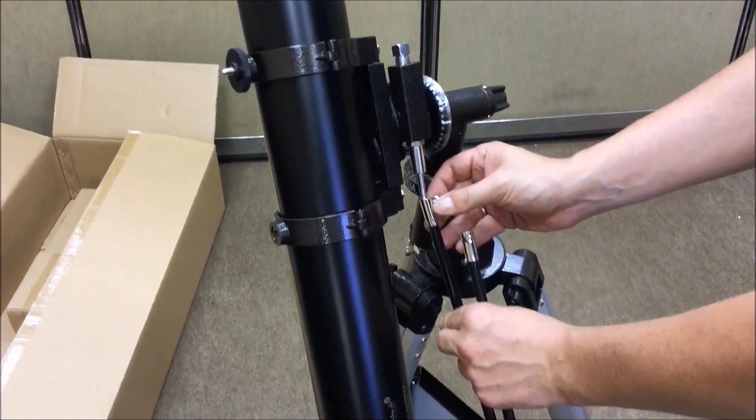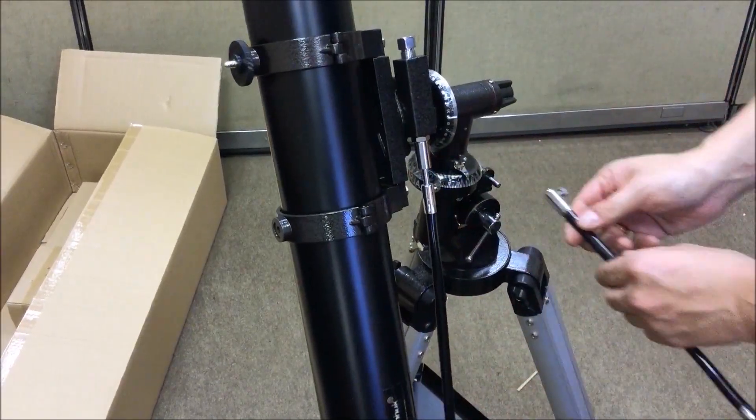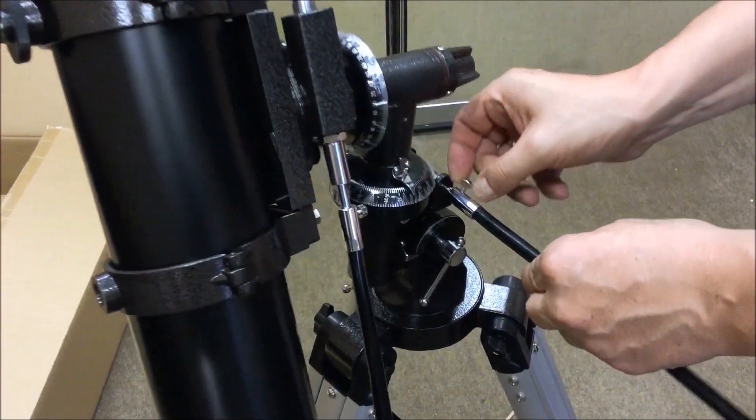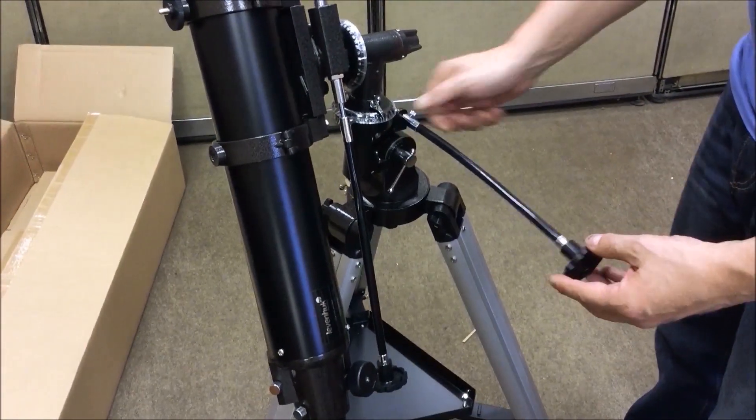Now we need to install declination and right ascension slow motion controls. The controls are attached to the corresponding axes. The locking screws need to be tightened manually.